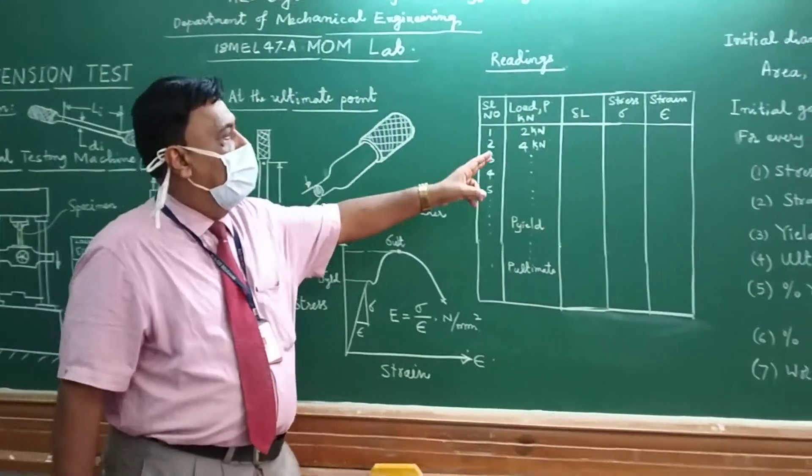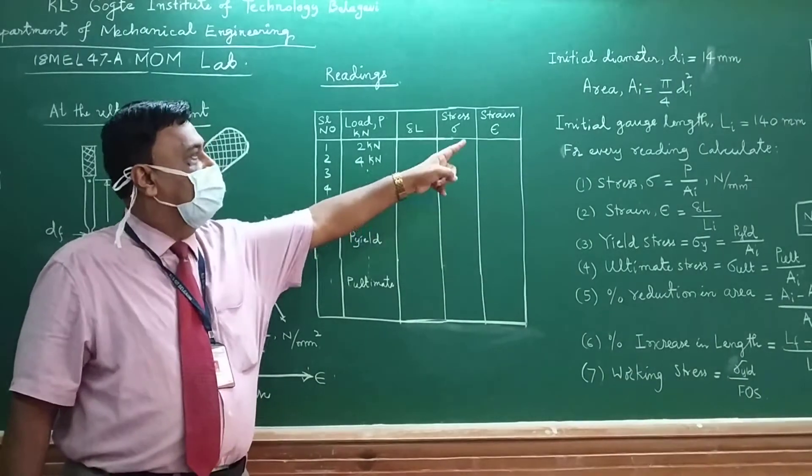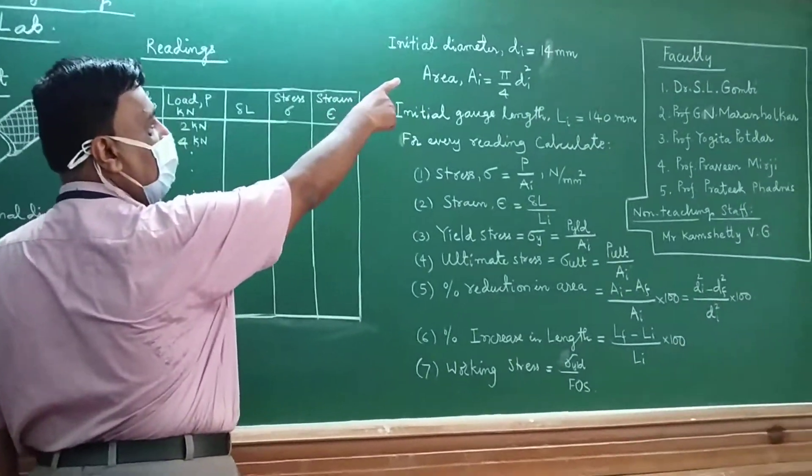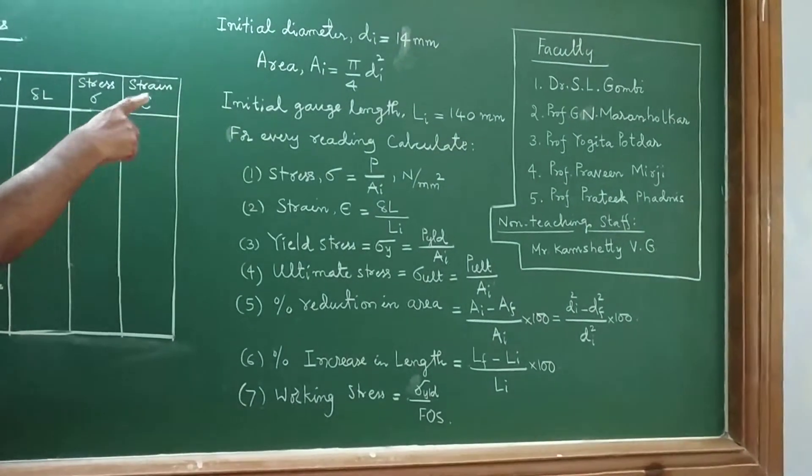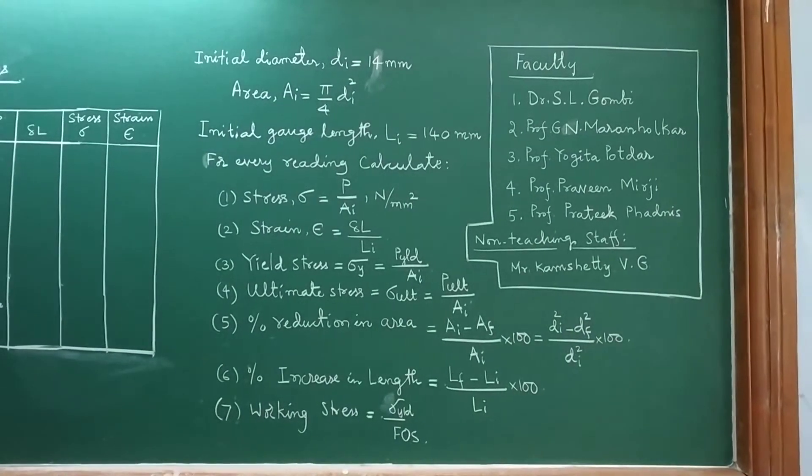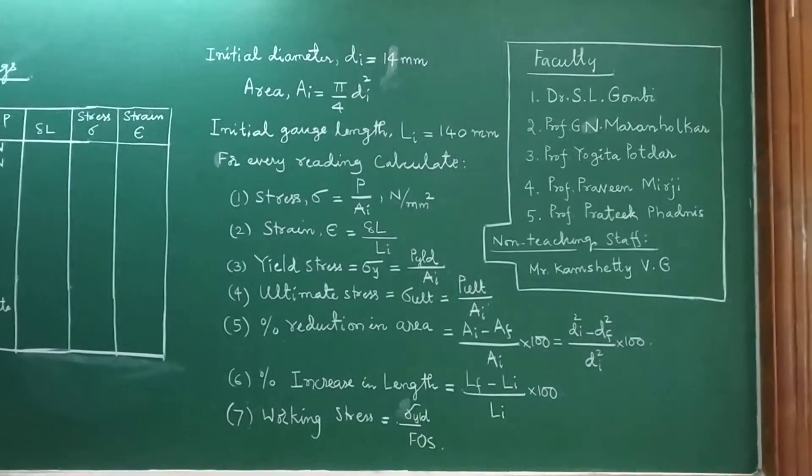Afterwards, by taking all these readings, every time you have to calculate stress and strain for each reading. Our initial diameter Di was 14mm. From that, we calculate the initial area Ai = π/4 × Di². When you measure the initial gauge length, it is 140mm.